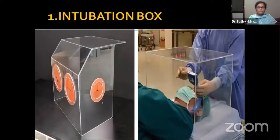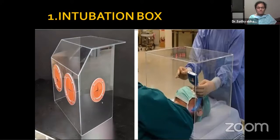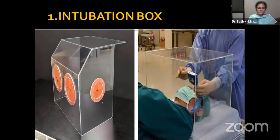An ideal barrier should be transparent, should contain the aerosol effectively, should have minimum access points, be easily available, cost-effective, easily disposable, and not cumbersome for the anesthetist. The first option is the intubation box — an acrylic or polycarbonate box with two or three portals. Advantages: reusable, washable with soap and water, inexpensive, transparent, allows insertion of hands up to the elbow. Disadvantages: the foot end is open and must be covered with a sheet; difficult to maintain sniffing position; restricts hand movements; difficulty using intubation aids like a bougie.